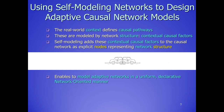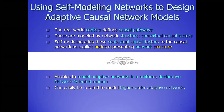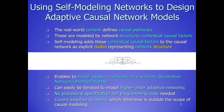With self-modeling networks, you can model adaptive networks in a uniform, declarative, and network-oriented manner using network concepts. You can iterate it easily to higher levels — higher-order adaptive networks. In the main talk earlier this morning I took examples from the neuroscience area, and now I will do it for the social science area.